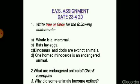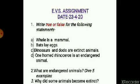So, children, today you have learnt about some amazing and interesting facts about animals. Now try to answer these questions. Question 1: write true or false. Part a: whale is a mammal. Part b: bats lay eggs. Part c: dinosaurs and dodo are extinct animals. Part d: one-horn rhinoceros is an endangered animal. Question 2: what are endangered animals? Give 5 examples. Question 3: why did some animals become extinct? Children, write down the answers of these questions and learn the answers with their spellings. With this we come to an end of chapter 2; we will start chapter 3 from tomorrow. That is all for today, bye bye.